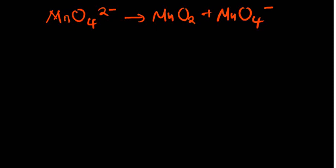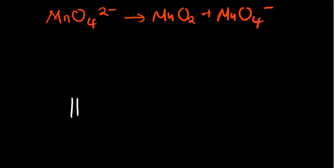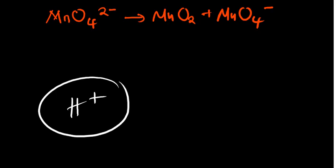Let's try to balance this equation in alkali solution. We cannot balance this equation by observation, so we'd have to use the half-reaction or ion-electron method. Except we are balancing it not in acidic media. In acidic media, we get to end with proton ions. For alkali and basic media, we'd have to end with hydroxide ions instead, so it's an extra step that you're going to observe.